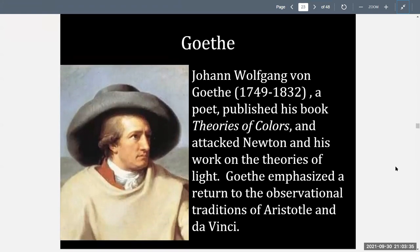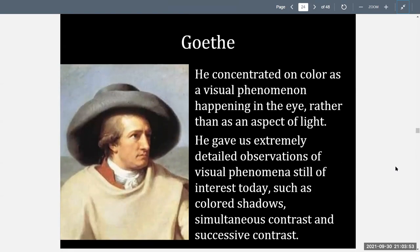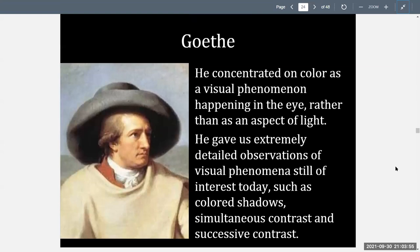Next up is Johann Goethe, who was a poet. He published a book, Theories of Colors, and attacked Newton and his work on the theories of light. Goethe emphasized a return to the observational traditions of Aristotle and da Vinci, concentrating on color as a visual phenomenon happening in the eye rather than as an aspect of light. He gave us extremely detailed observations of visual phenomena still of interest today, such as colored shadows, simultaneous contrast, and successive contrast.